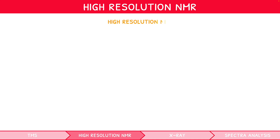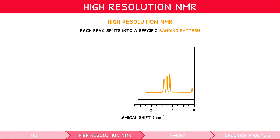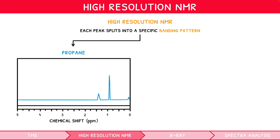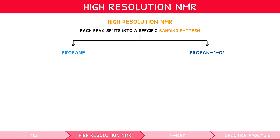A high-resolution NMR spectrum appears very similar to a low-resolution spectrum. The only difference is that each peak splits into specific banding patterns which reflect the number of hydrogens in the adjacent hydrogen environment to the environment giving rise to the peak. In our standard level series, we used the low-resolution spectrum for propane and propan-1-ol; their high-resolution spectra would be as follows.